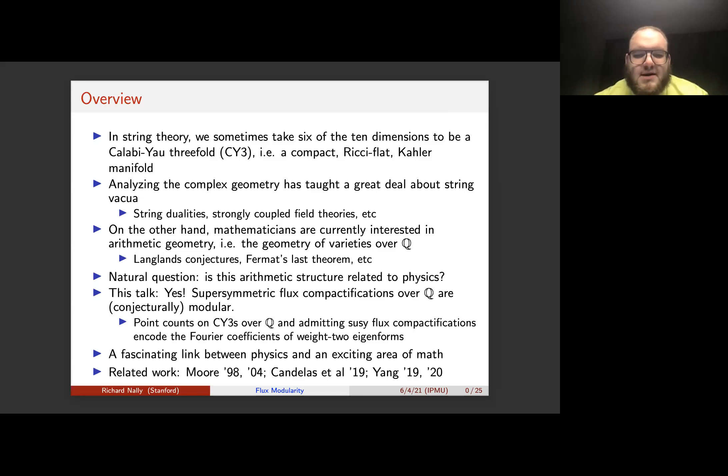But roughly speaking, if you have a polynomial defined over the rational numbers, you can do point counts—you can reduce the equation over finite fields and count how many solutions it has. And when I say the threefold is modular, what I mean is these point counts will encode the Fourier coefficients of a type of modular form called weight-two eigenforms.